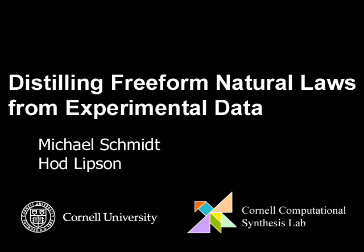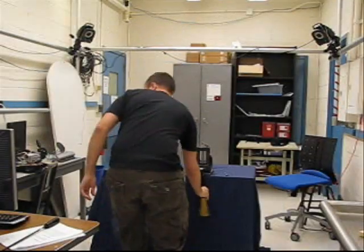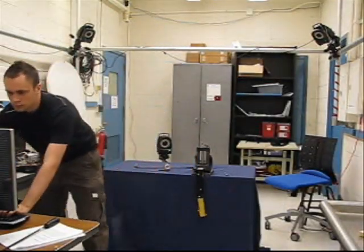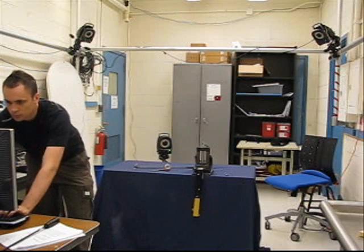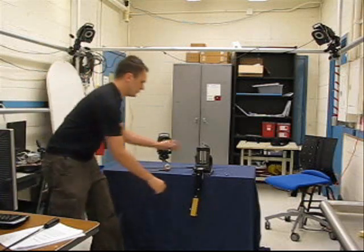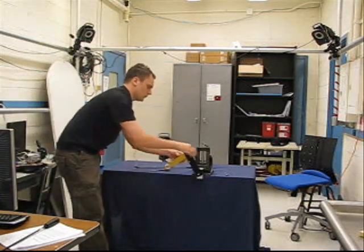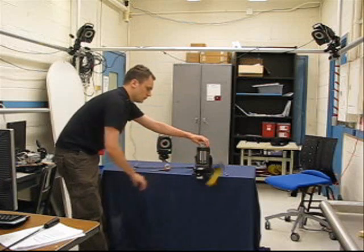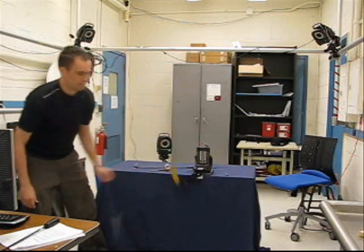For centuries, scientists have attempted to document the analytical laws that underlie physical phenomena in nature. We have developed a technique for extracting laws of nature automatically from experimental data. We do this by searching for invariant and conservation relationships that various systems obey.